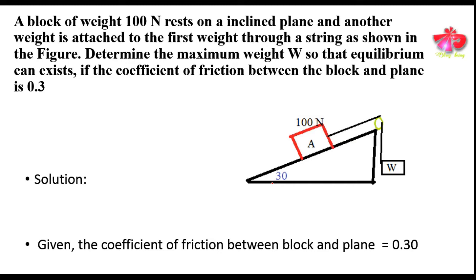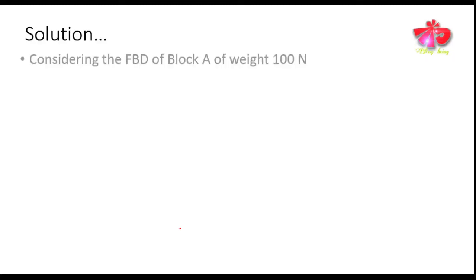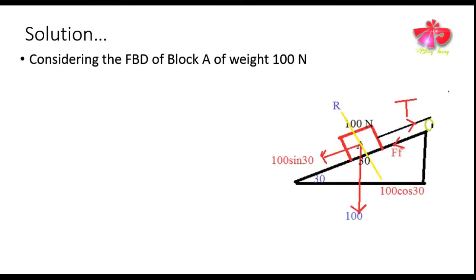The free body diagram of block A — that is the block of 100 Newton — will be as shown in the figure. The weight W will be acting vertically downward, and this angle of 30 degrees is made by the inclined plane with the horizontal. If we resolve this, we will get 100 sin 30 degrees acting along the direction opposite to the normal reaction.